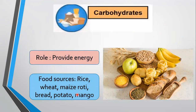Carbohydrates provide 50 to 80 percent of the energy we need. Sugars, starch and cellulose are examples of carbohydrates. These are made by plants during photosynthesis. Sugars are simple carbohydrates and they provide quick energy to the body.